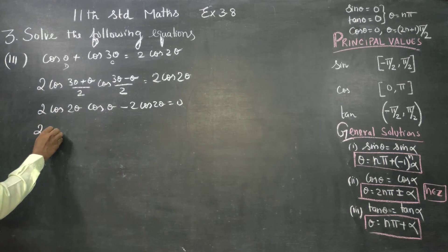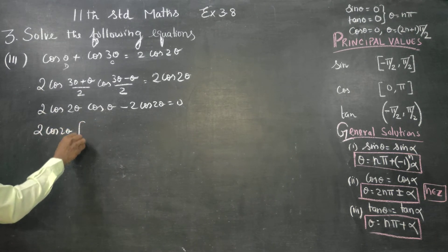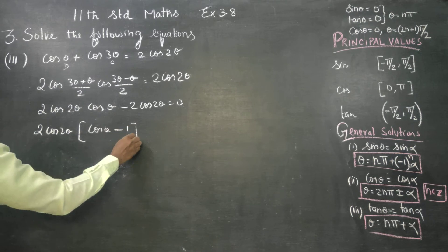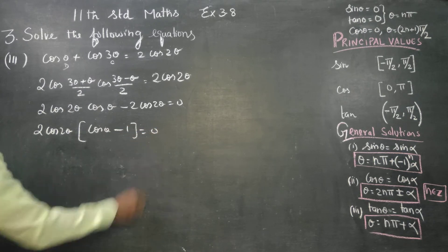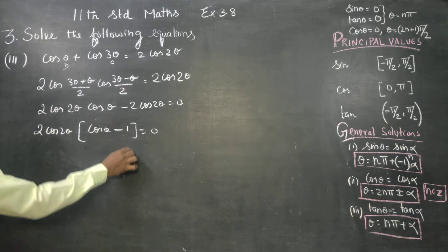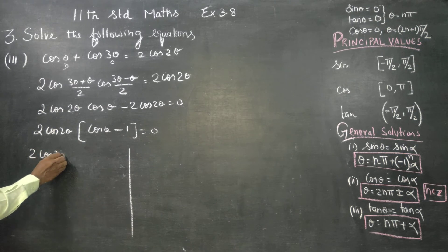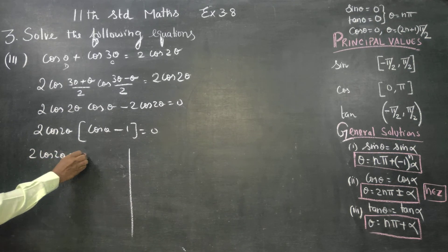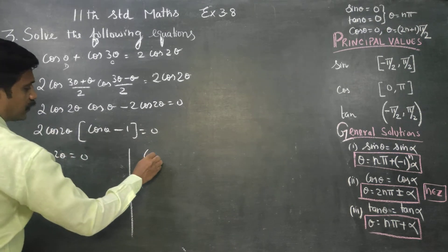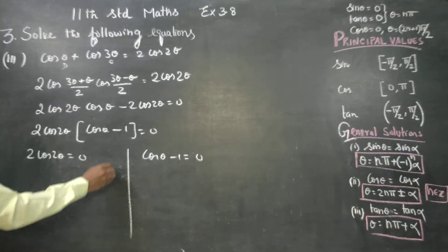Taking 2 cos 2 theta as a common factor, the remaining balance gives cos theta minus 1 equal to 0. So we have two equations: 2 cos 2 theta equal to 0, and cos theta minus 1 equal to 0.